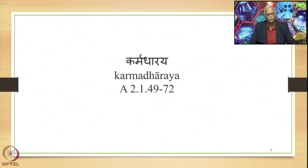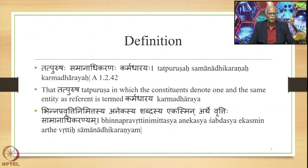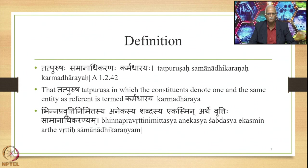After the Vibhakti Tatpurusha, we started studying another extremely important variety of Tatpurusha, namely Karmadharaya. Karmadharaya is stated in section 2.149 up to 2.172, governed by the Adhikara Samanadhi Karanena. Karmadharaya is defined in the Paninian grammatical tradition by the sutra: Tatpurusha Samanadhi Karanaha Karma Dharaya (1.242). What it means is that Tatpurusha in which the constituents denote one and the same entity as referent is termed Karmadharaya.